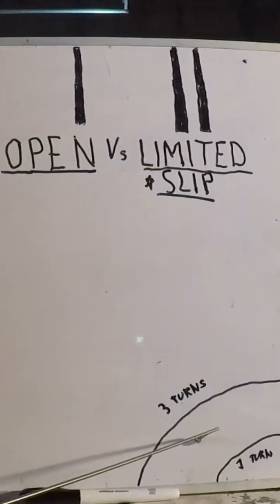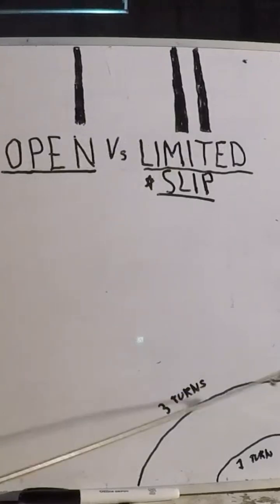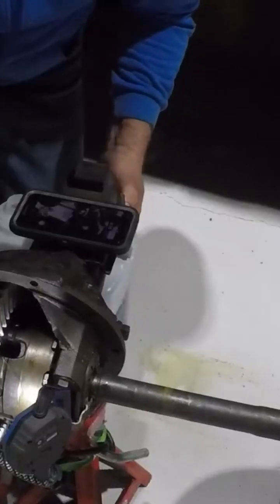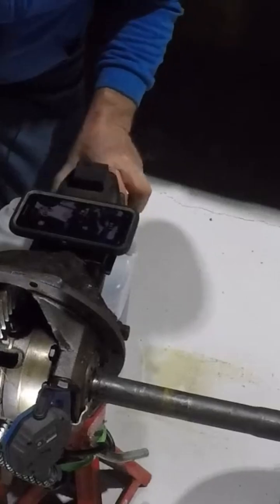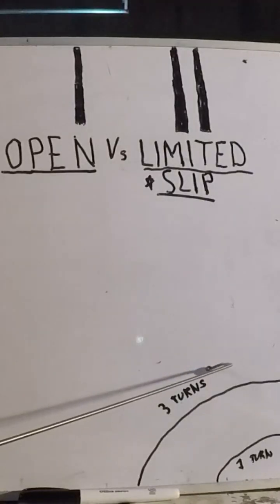And it will make it around the corner just fine. But if you put a load to this, you step on the gas when you're going around this corner, it's going to limit the difference between this tire speed and this tire speed, which means this tire is turning one revolution, this tire is going to turn three.